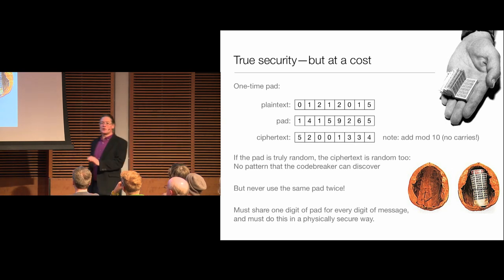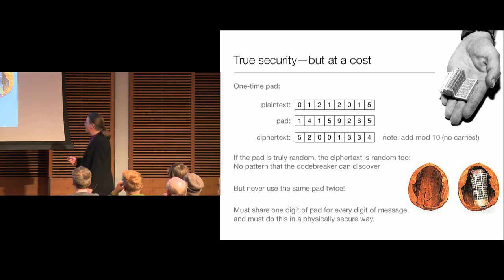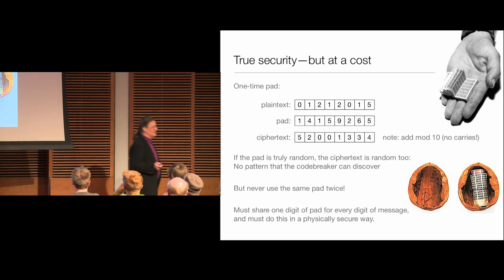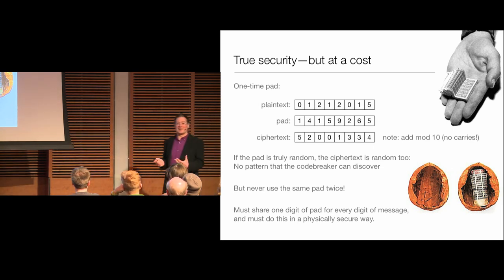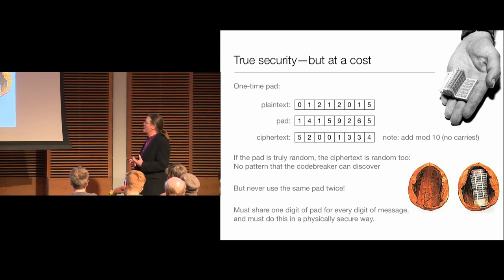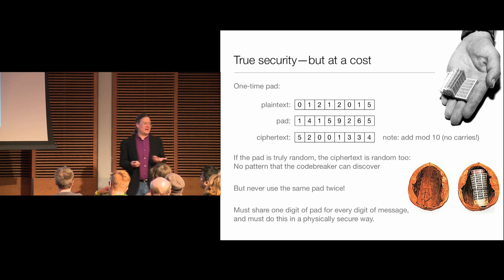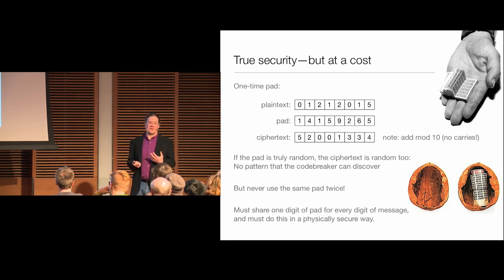During the Cold War, both sides did a lot of this, with tiny books full of tiny digits, sometimes rolled up inside a walnut shell. So you and I have to meet in Gorky Park, or hide a walnut shell under a bridge somewhere. If you get caught crossing the border with a walnut shell full of tiny digits, you might get into trouble. While this form of cryptography is perfectly secure, it also requires a lot of physical security — we have to share physical stuff regularly, which carries its own risks.